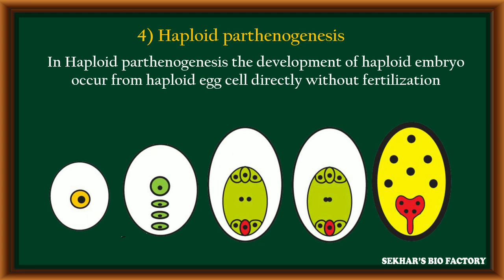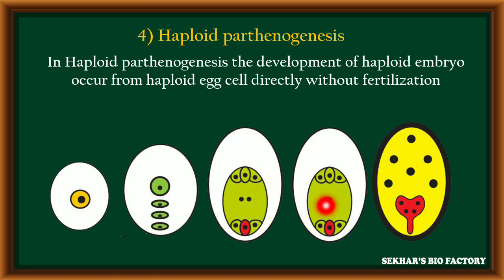The fourth method is haploid parthenogenesis. Normal development of the embryo sac takes place — the megaspore mother cell undergoes meiosis division and forms a haploid embryo sac. In this haploid embryo sac, the haploid egg cell develops into an embryo without fertilization. When the haploid egg cell becomes an embryo, the ploidy of the embryo is also haploid. This process is called haploid parthenogenesis.